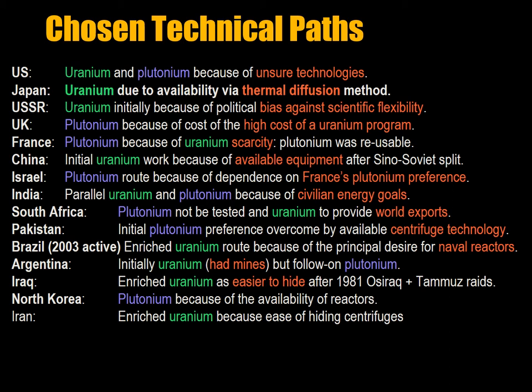The British went with plutonium because they estimated it was lower cost than a uranium program — essentially plutonium could come from an energy program. France pursued plutonium because of uranium scarcity; you need less fissile material in a plutonium program, and plutonium was reusable. Initially China pursued uranium because of the availability of equipment after the Sino-Soviet split — the Soviets had provided a lot of the technology and training. Israel followed the plutonium route because of their dependence on France's nuclear reactor, which was built at Damona, and because of France's own preference for plutonium.